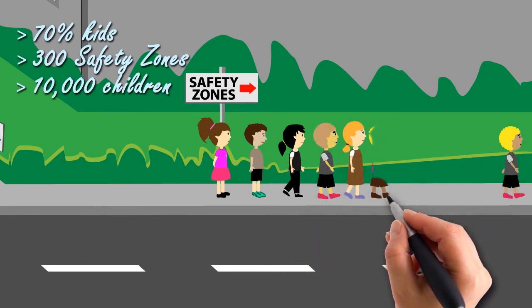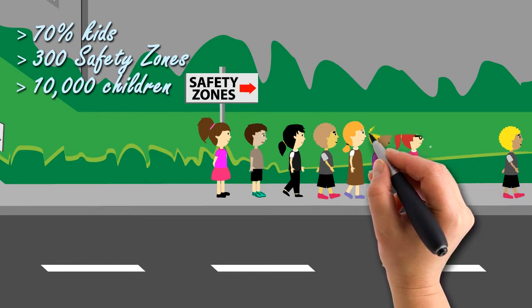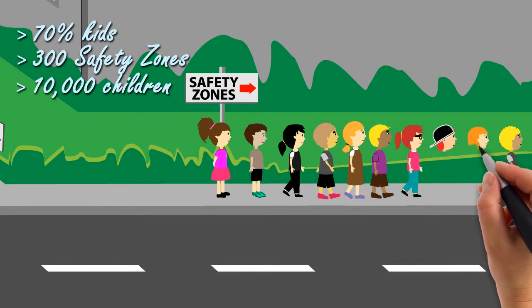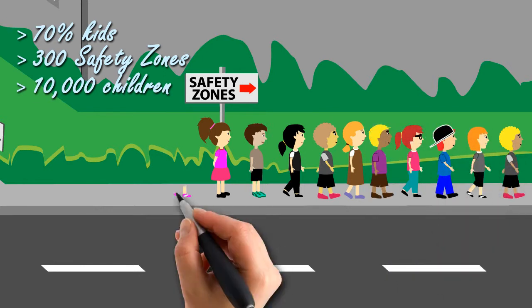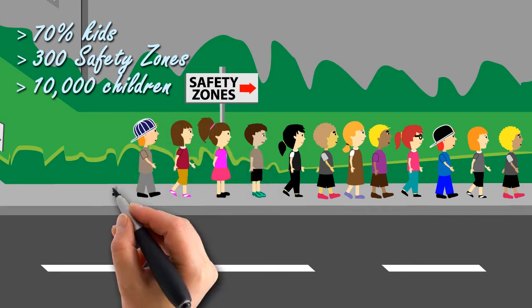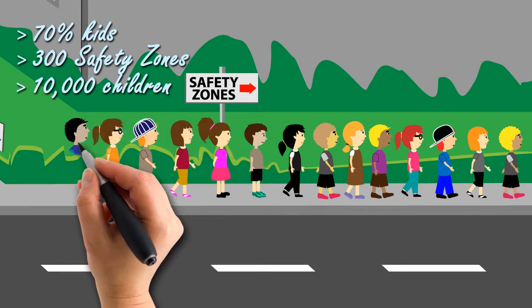But there are so many more children that desperately need safety zones as well. We need more shelters to give these children a safe place to go. Do you want these kids to have a safety zone as well? Do you think we should take care of all of them? Do you want to help them?